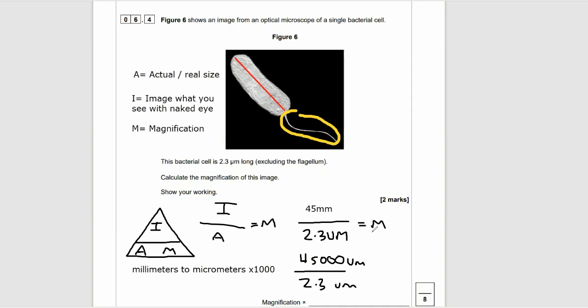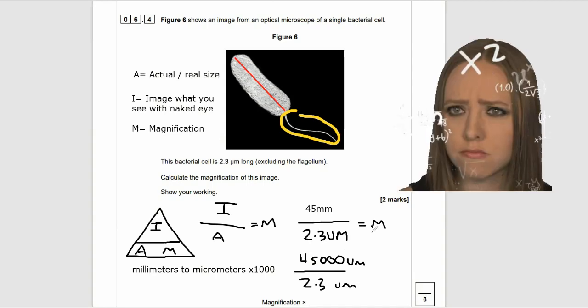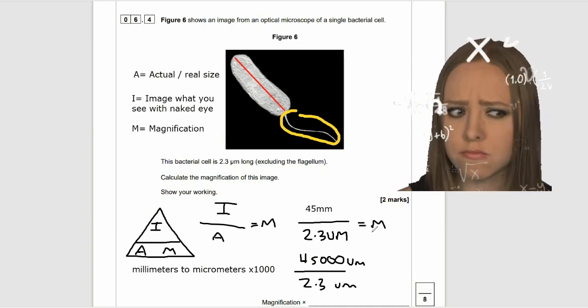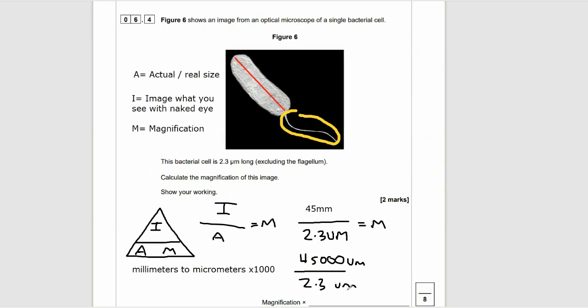And at the bottom, we've still got our 2.3 micrometres, as we didn't need to convert those units. And if I carry out that calculation, whack that in the old scientific calculator, you should get an answer around about 19,565, and that is the magnification. So that's how many times the image has been magnified compared to the real image. And that will get you the two marks.